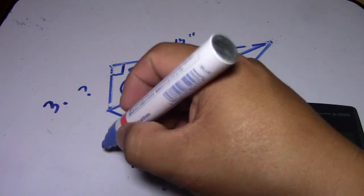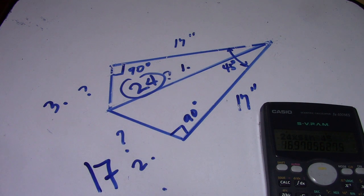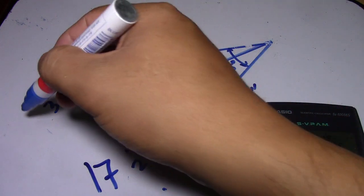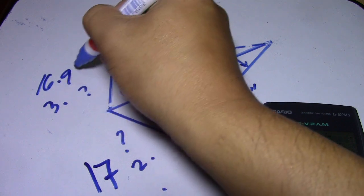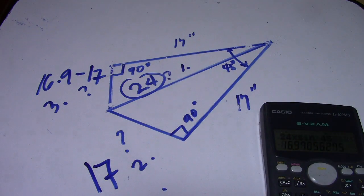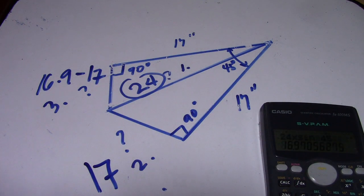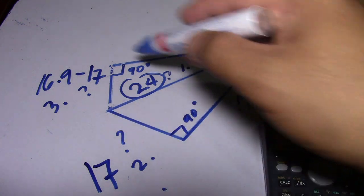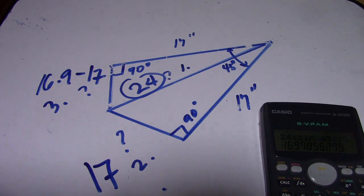Number two is 17, and number three has the same answer — also 16.9, which rounds to 17. So we have a square, and the answers are: number one is 24, number two is 17, and number three is 17. We have a given of 45 degrees.